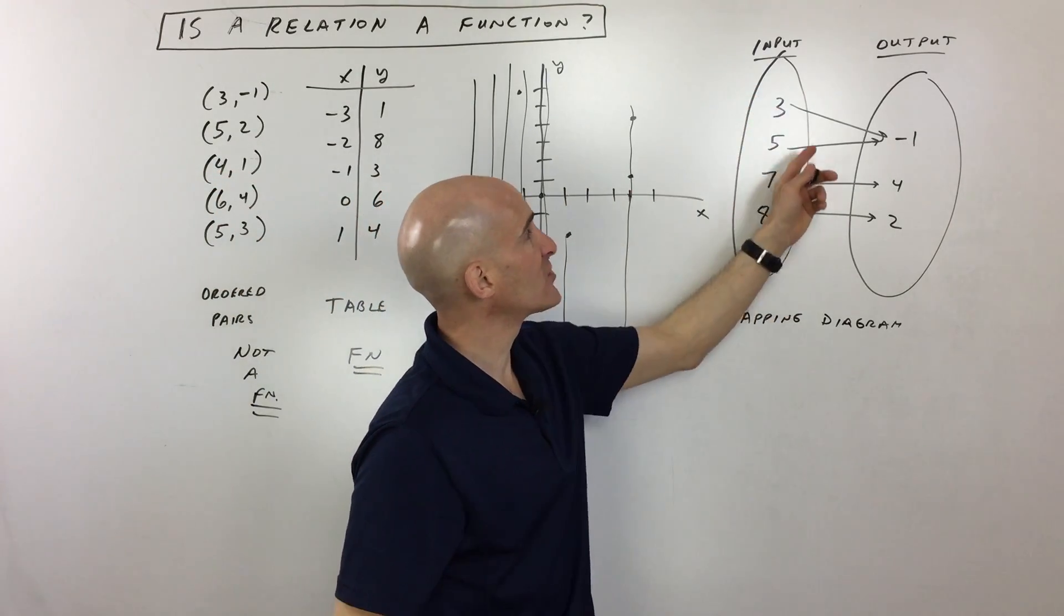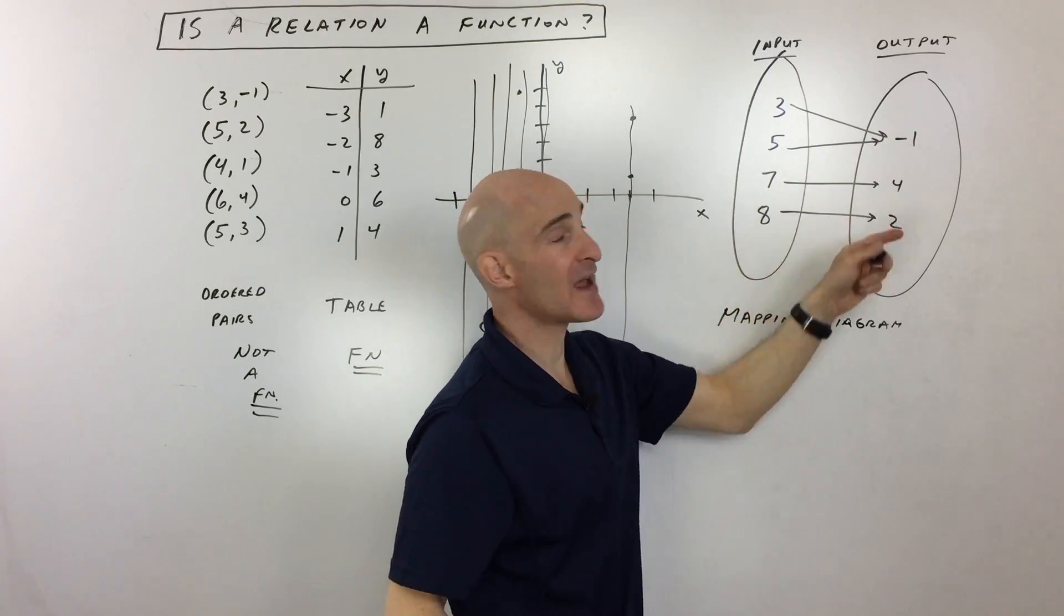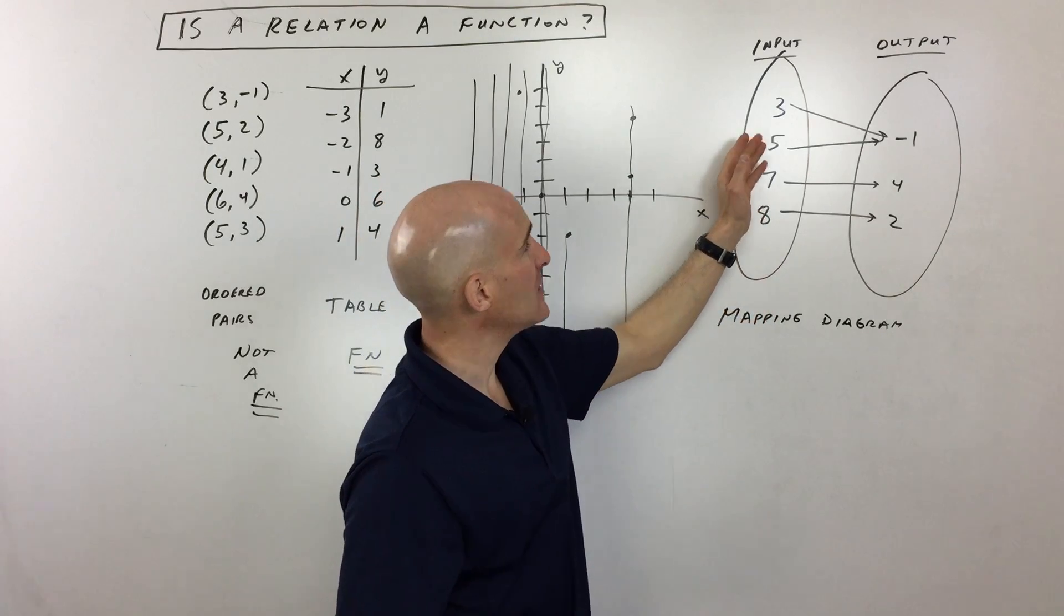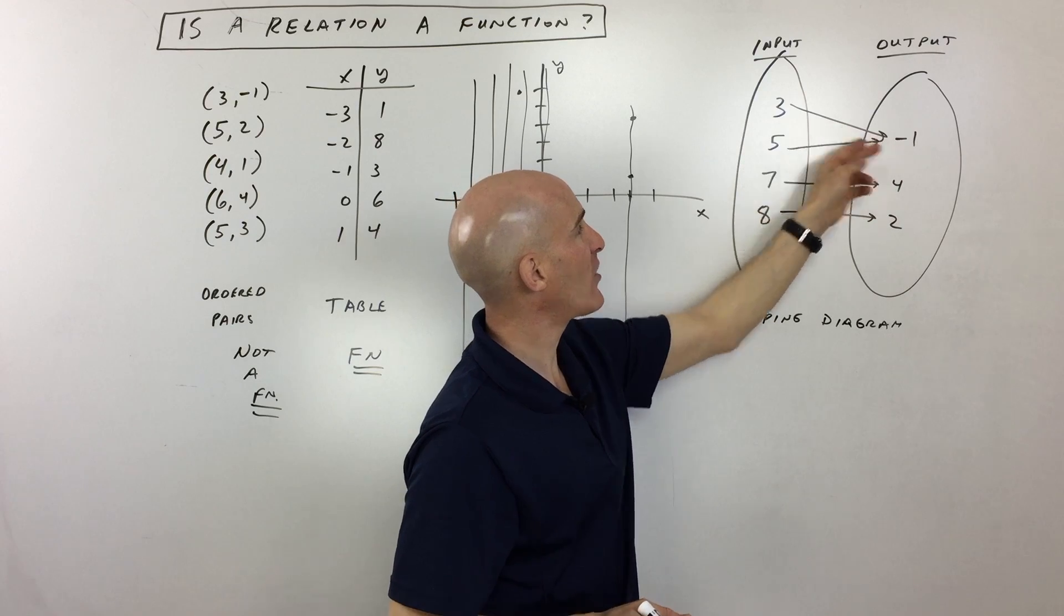And then mapping diagram—just like it looks, you have an input and output, and you're mapping or drawing an arrow from the input to the output. Now, some students make a little mistake with the mapping diagram because they see these arrows going to the same output like that, and they say, wait a second, something doesn't look right here.